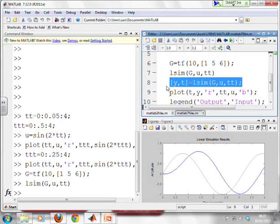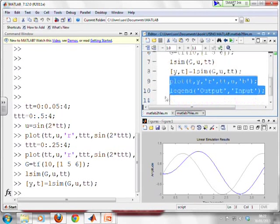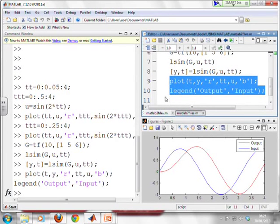However, if I want to control the plot, then far better. Use the full argument. There it is. yt equals lsim g u tt. And then control the plot myself. Say exactly what I want to happen. And you'll see here, I've used a plot statement which says put the output in red and put the input in blue. So I know which is which.